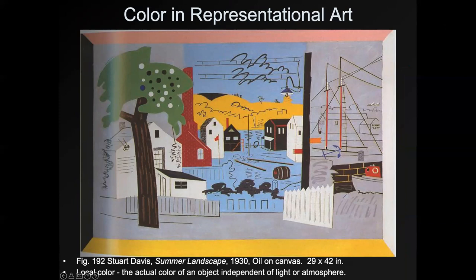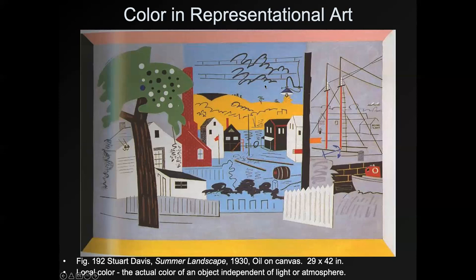Color in representational art can be used in a couple of different ways. The simplest is local color — what you do as a kid with your crayon box. Fire hydrants are red so you use red, tree leaves are green so you get the green crayon. It's the basic color of an object as if it existed away from the atmosphere and light — not a color you'd necessarily see in real life. Local color is the actual color of an object independent of light or atmosphere.